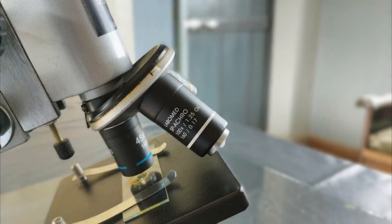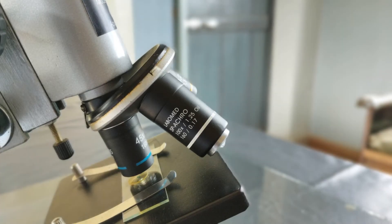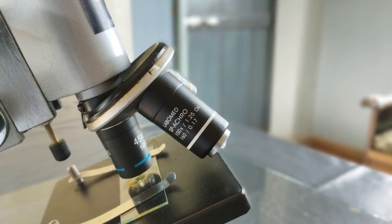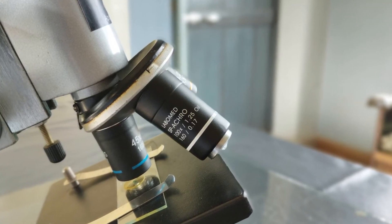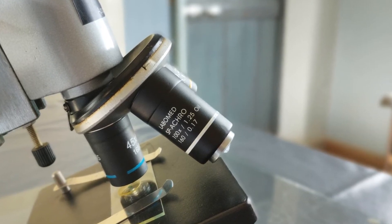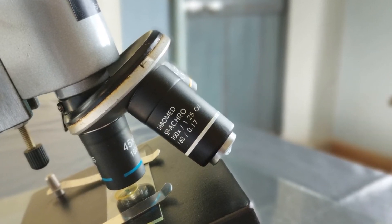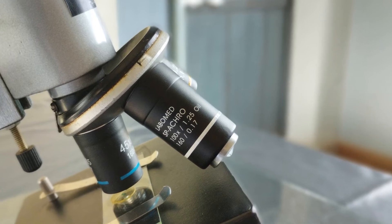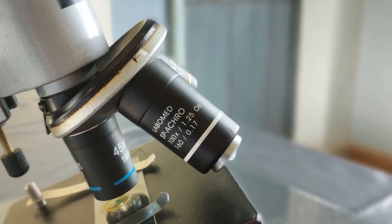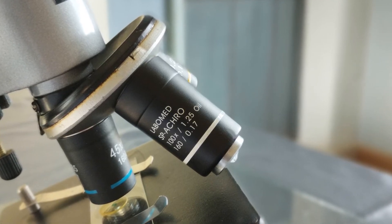Now coming to the usage of the highest power objective in a brightfield microscope, also known as the 100x immersion lens. There are certain fields in biology where minute details or extremely tiny objects such as bacteria need to be examined. This is where the immersion lens comes as a great add-on advantage in microscopy. The most commonly known and widely used high power immersion lens is the 100x oil immersion lens.